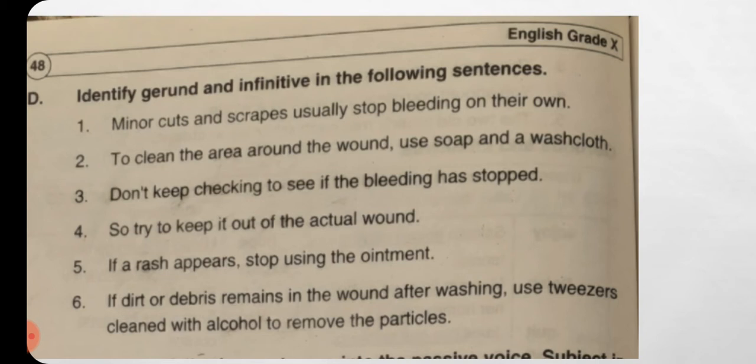Now we have: identify gerund and infinitive in the following sentences. You are to identify where gerund is used and where infinitive is used. First: 'Minor cuts and scrapes usually stop bleeding on their own' — here 'bleeding' is gerund. Second: 'To clean the area around the wound, use soap and a washcloth' — here 'to clean' is infinitive. Third: 'Don't keep checking to see if the bleeding has stopped' — here 'checking' is working as gerund and 'to see' is infinitive.